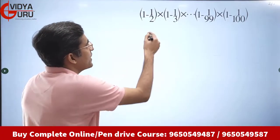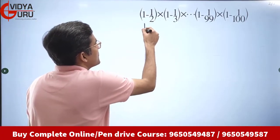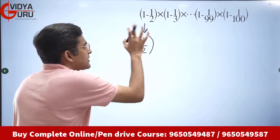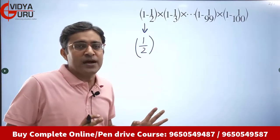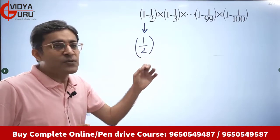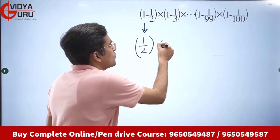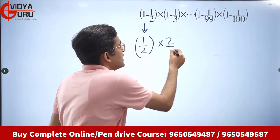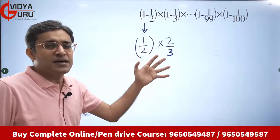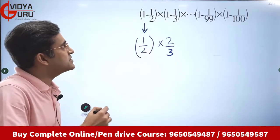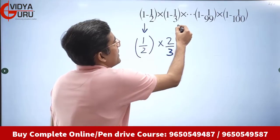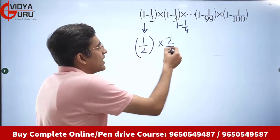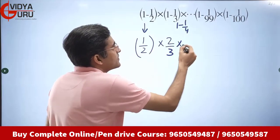From the first term, 1 − 1/2, I get 1/2 — I simply subtracted 1/2 from 1. From the second term, 1 − 1/3, I get 2/3. The third term in this series will be 1 − 1/4, so from the third term I get 3/4.